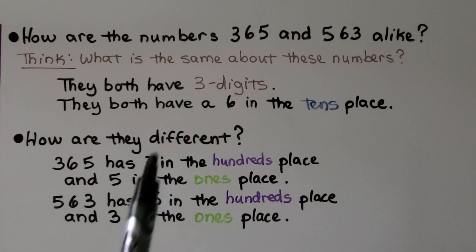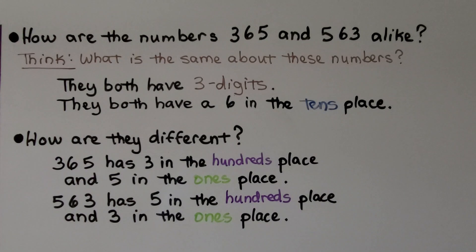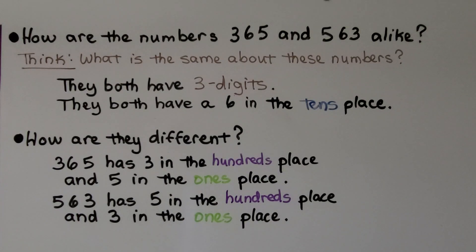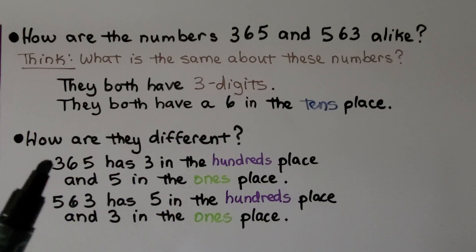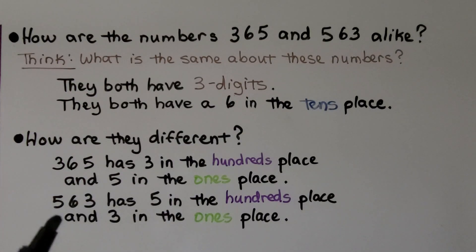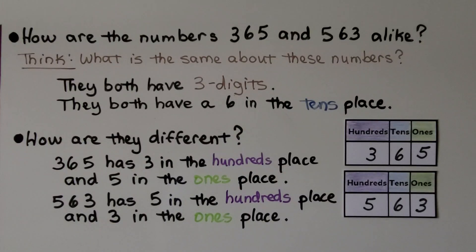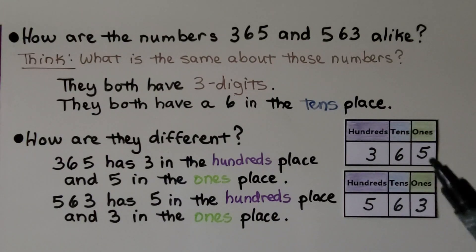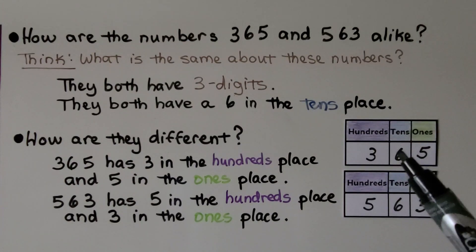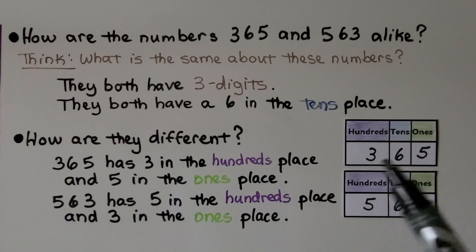How are the numbers 365 and 563 alike? They both have three digits, and they both have a six in the tens place. How are they different? Well, 365 has three in the hundreds place and five in the ones place, while 563 has five in the hundreds place and three in the ones place. In a place value chart, we can see that one has three hundreds and the other has five hundreds, and the ones digits are also swapped.